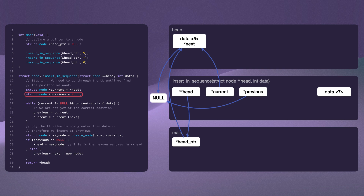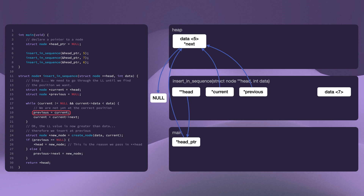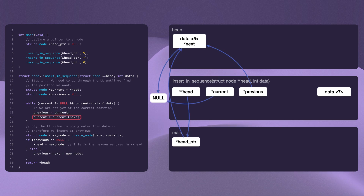We then have our while loop and we're saying: while current is not null — yes, that's true, it's pointing to the node with the value of five — and while the current data value, which is the number five, is less than the integer stored in data, which is the value seven inside of the function. Both of those conditions are true, so we're going to iterate through our linked list. Our previous pointer is going to change and be assigned to where current is currently pointing, so it's also going to point to the node with the value of five. Then current shifts forward and follows the next pointer of the node with the value of five — it's pointing to null, so current is now pointing to null. Previous has moved forward, current has moved forward, and we've iterated through our linked list.